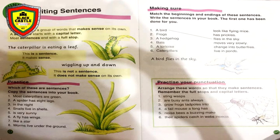A sentence starts with a capital letter. Whenever we write a new sentence, we start with a capital letter — the first word starts with a capital letter. Most sentences end with a full stop. When we have said everything we want to say, we add a full stop.